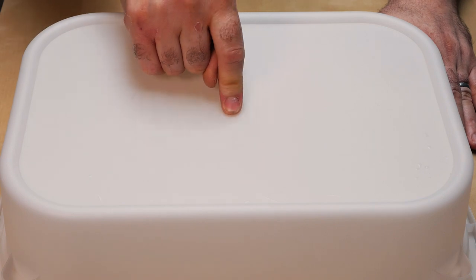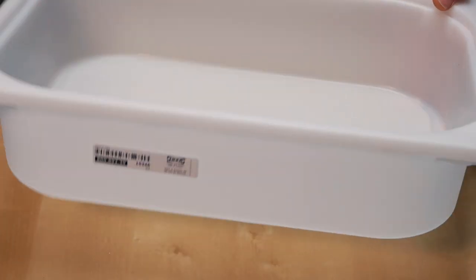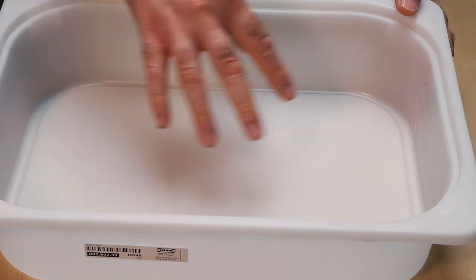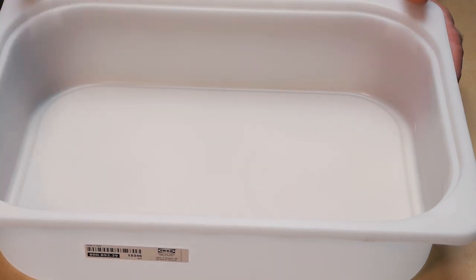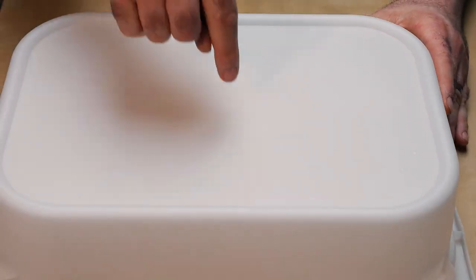What we first need to do is drill a hole through the bottom of the flood table. So the water needs to come up through the middle, flood this, and then drain back out again. So we're gonna drill a hole through the bottom.